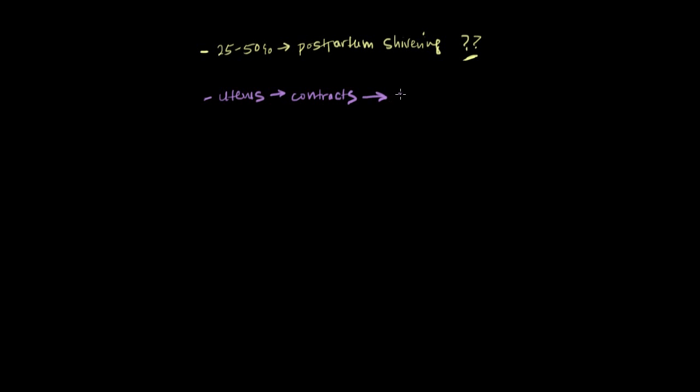And after a few of those successive contractions, the uterine muscle starts to shorten. And those contractions also help to constrict the blood vessels that are running through the uterine muscle. And that helps to control any bleeding that might be going on.